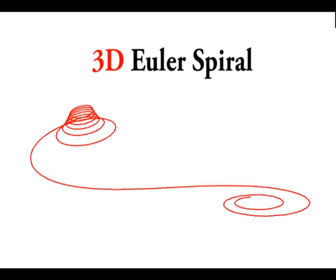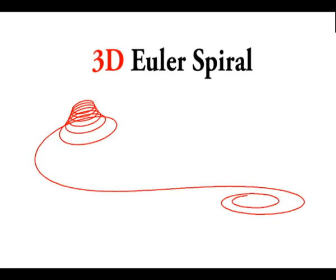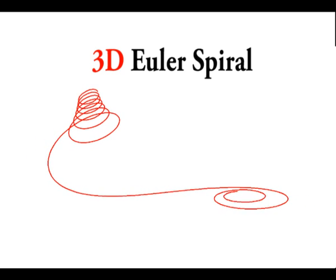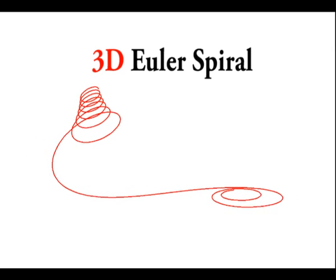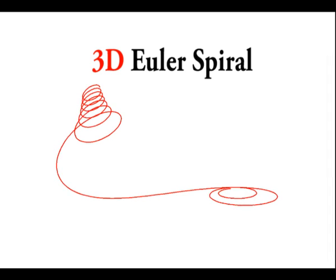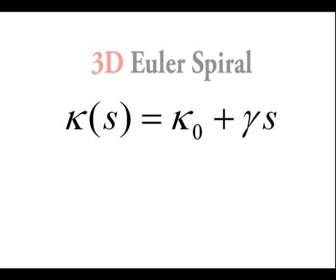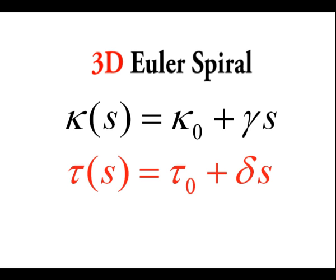Here we see a planar Euler spiral becoming a 3D Euler spiral while having its torsion grown from zero. Planar Euler spirals are curves whose curvature evolves linearly along the curve. We define 3D Euler spirals as curves having both curvature and torsion evolve linearly along the curve.